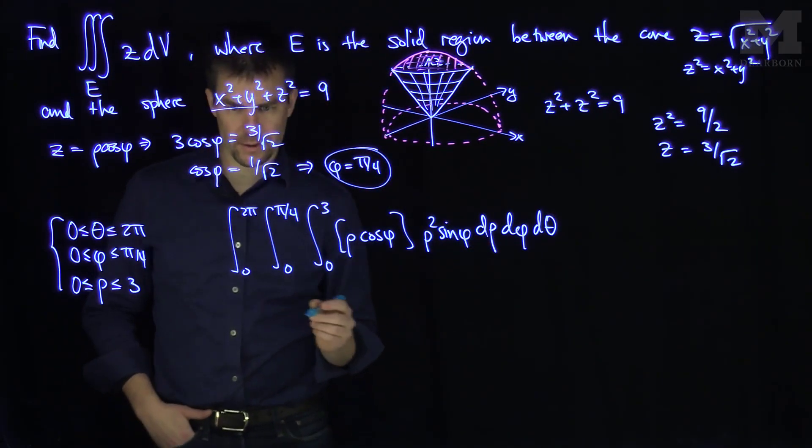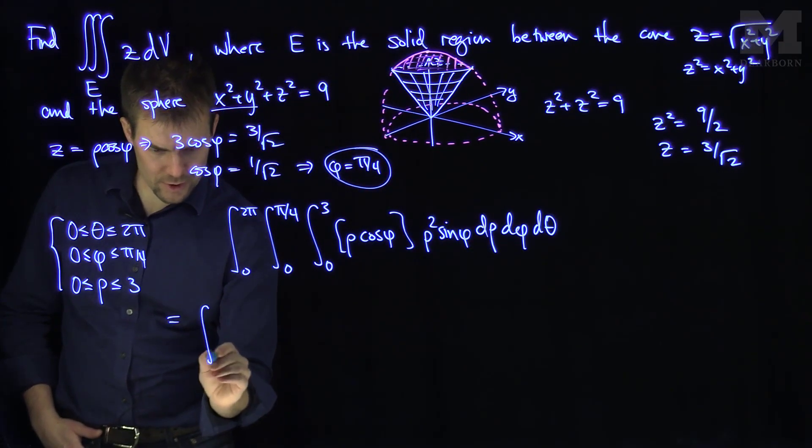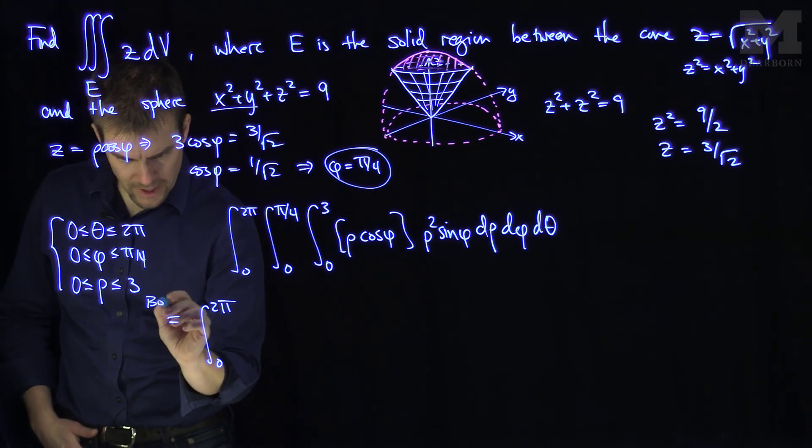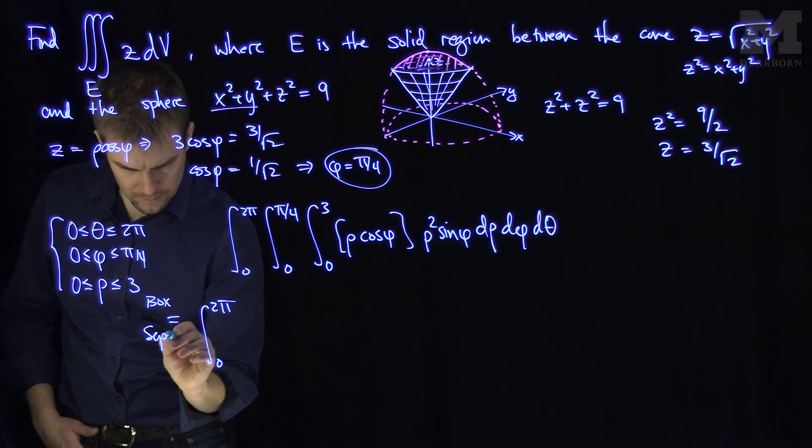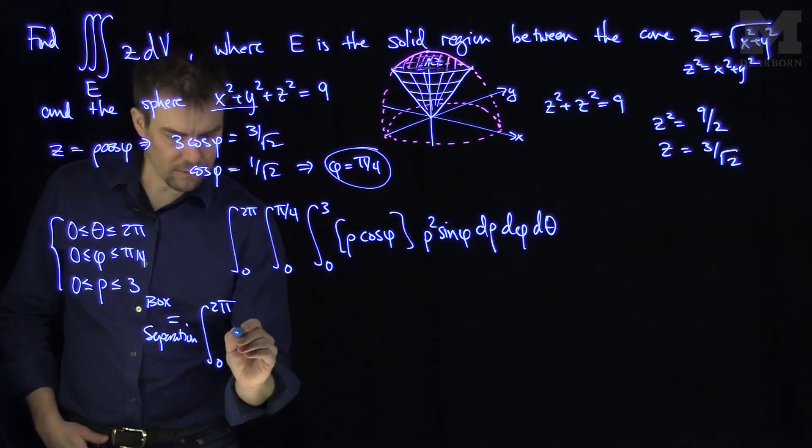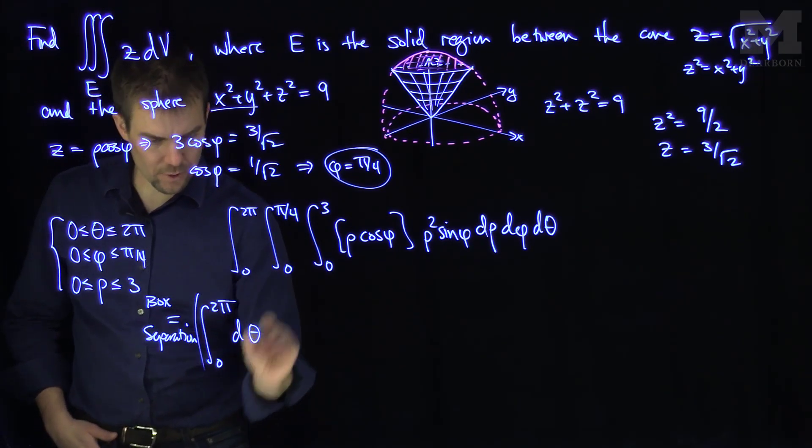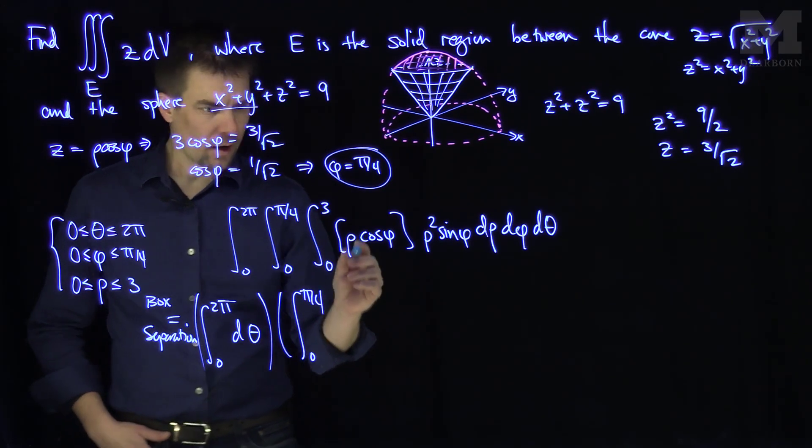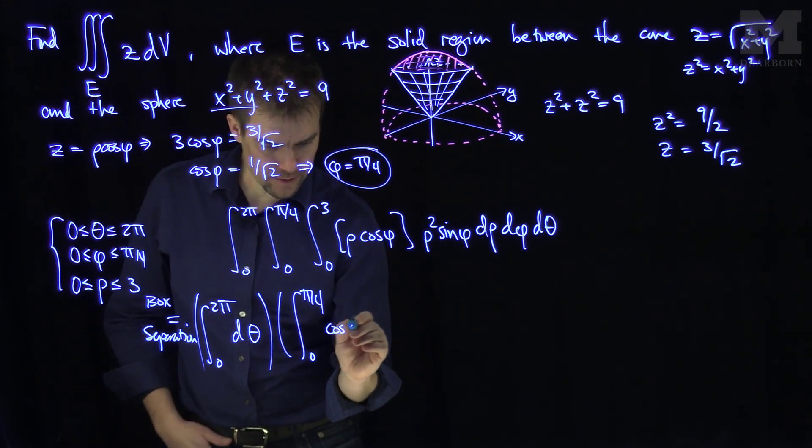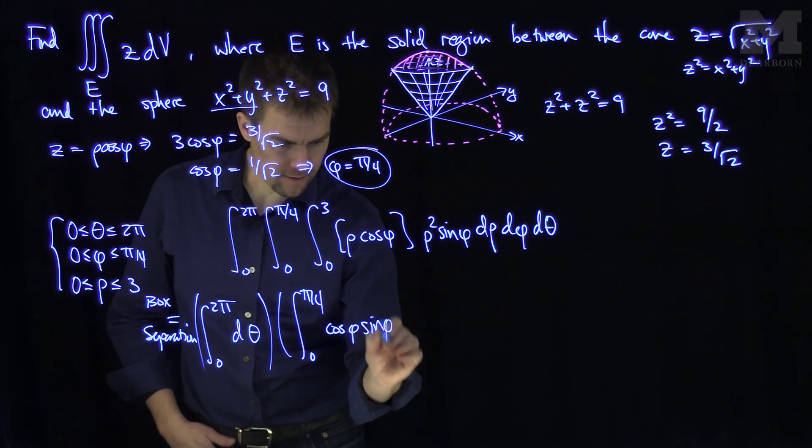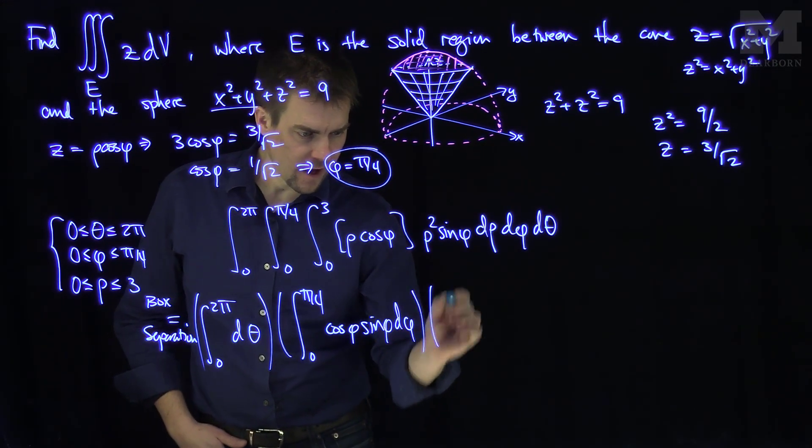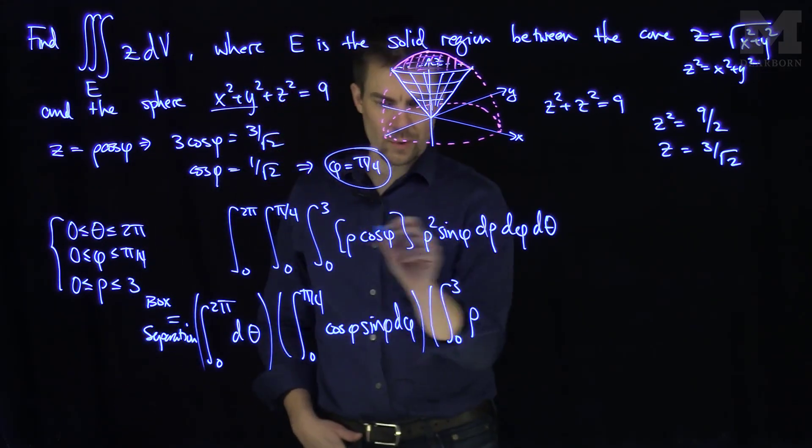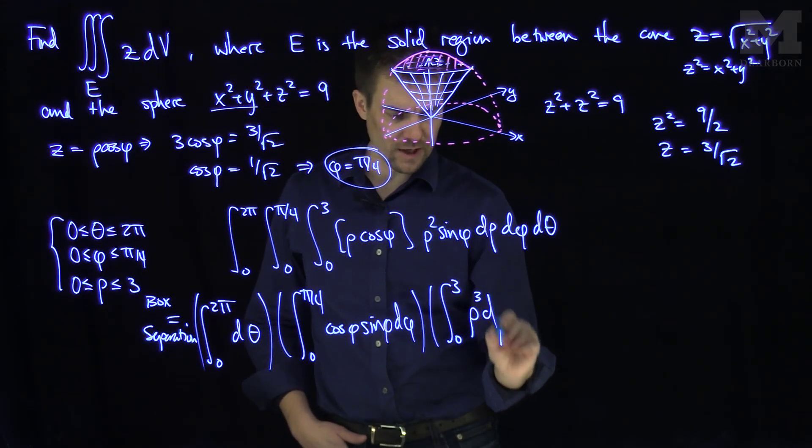And we can box separate this. So by box separation, this is the integral from 0 to 2 pi. This is box separation of d theta. There's no theta to integrate. The integral from 0 to pi over 4 of cosine phi sine phi. Cosine phi sine phi, d phi. And then the integral from 0 to 3 of how many rhos do we have? We have rho squared and rho, so that's rho cubed, d rho.